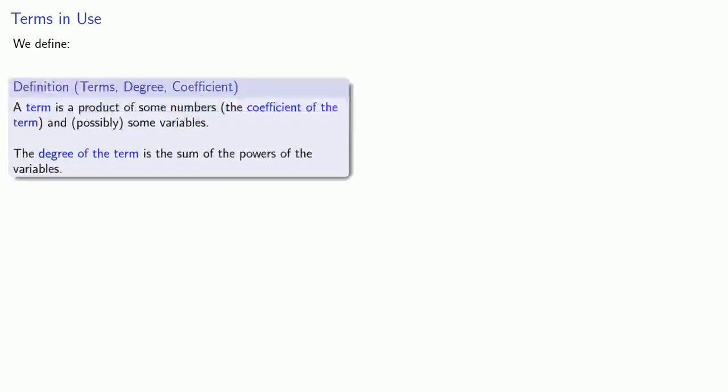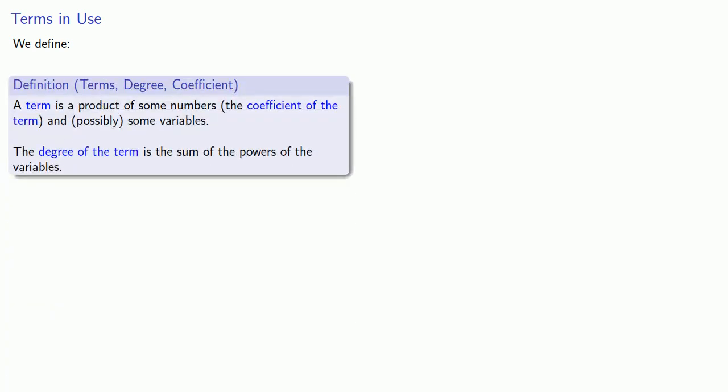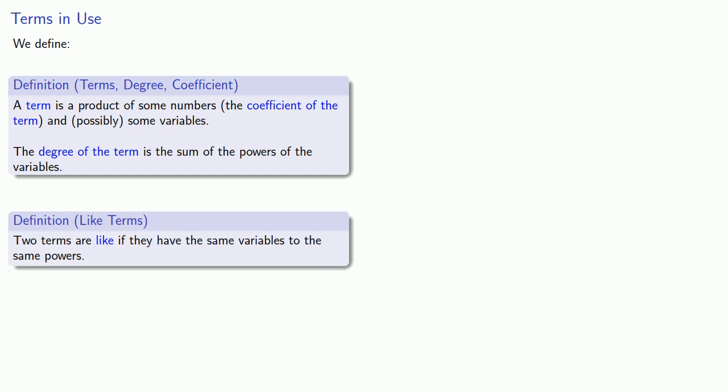Definitions are the whole of mathematics, all else is commentary. A term is a product of some numbers, the coefficient of the term, and possibly some variables. The degree of the term is the sum of the powers of the variables. We'll also define like terms. Two terms are like if they have the same variables to the same powers.